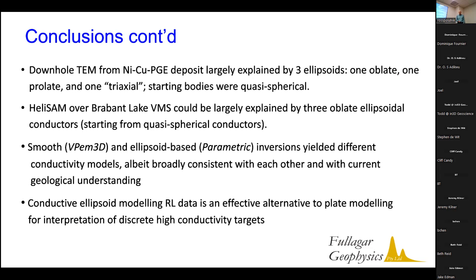Q: How fast is fast — seconds, minutes, hours? A: The first example, the downhole one, ran in 46 seconds. The second HeliSAM one — it's a much bigger data set — I think it ran in about four or five minutes. The first one is admittedly a small data set with only two holes, three bodies, and two loops, but 45 seconds is pretty fast.